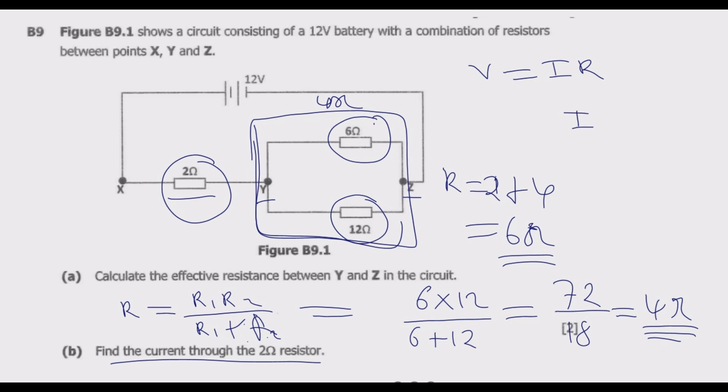So to find the current, we just find the current for the entire circuit. Current is equal to voltage divided by resistor for the circuit. So the entire voltage is 12. So it will be 12 divided by 6. Then we're going to end up with 2 amps.